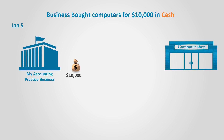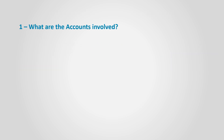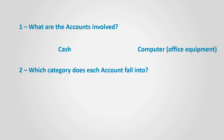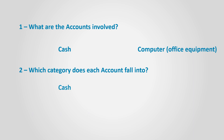On January 5th, the business bought computers for $100,000 in cash. To analyze the transaction, we ask ourselves five questions. What are the accounts involved? Since the business bought computers, the computers account or office equipment account is involved, and cash is paid, so the cash account is also involved. Which category does each account fall into? Cash falls in the assets category, and computers are owned by the business, so they fall in the asset category as well.